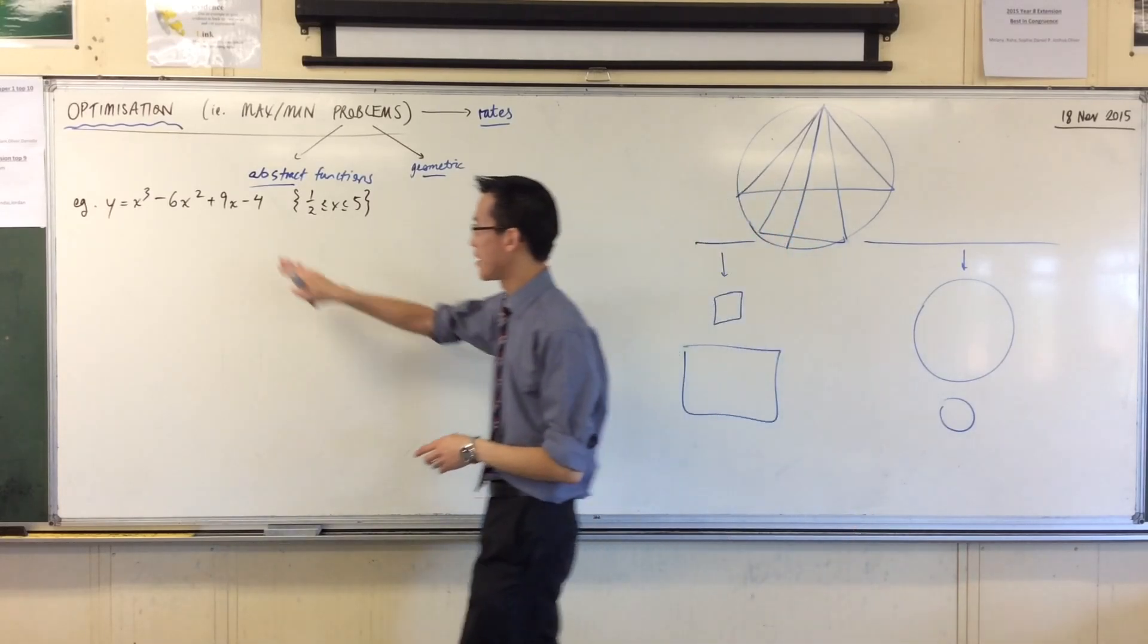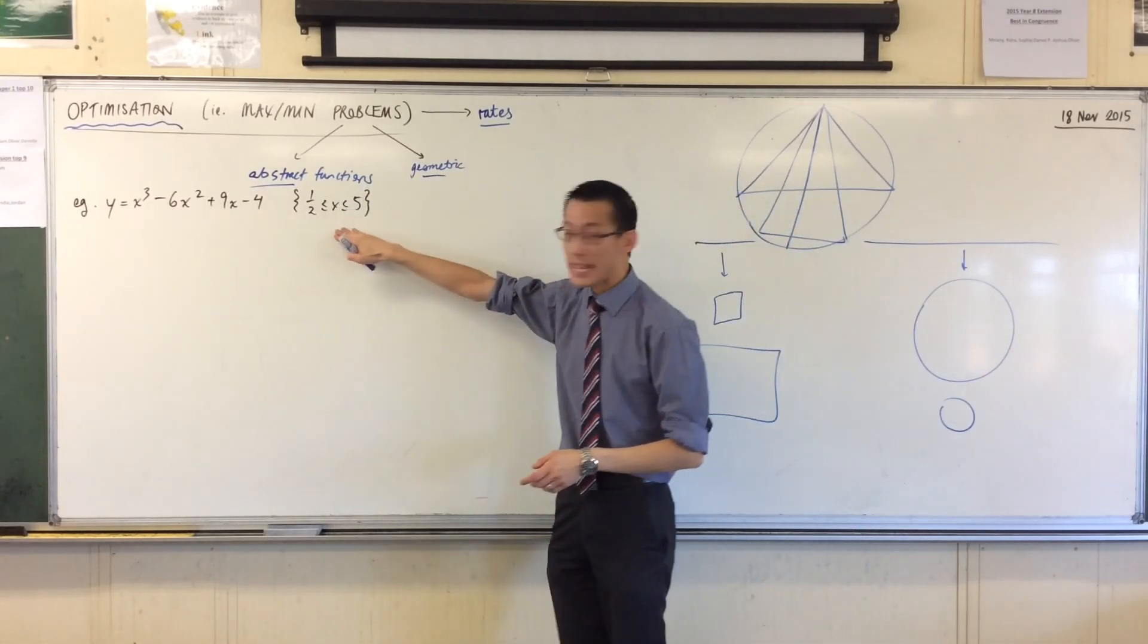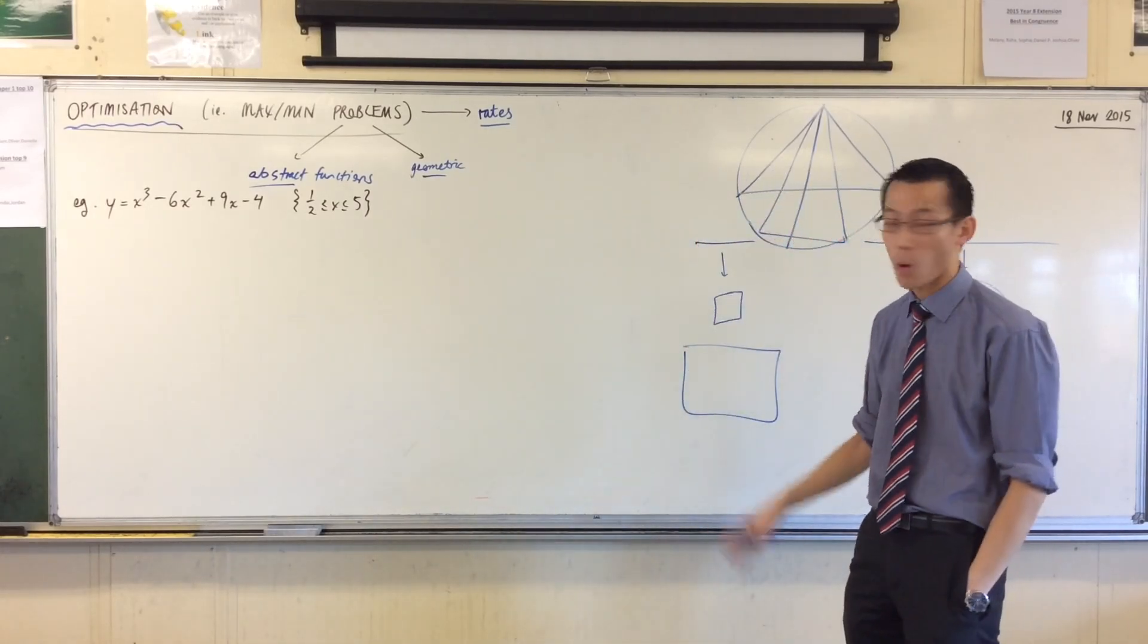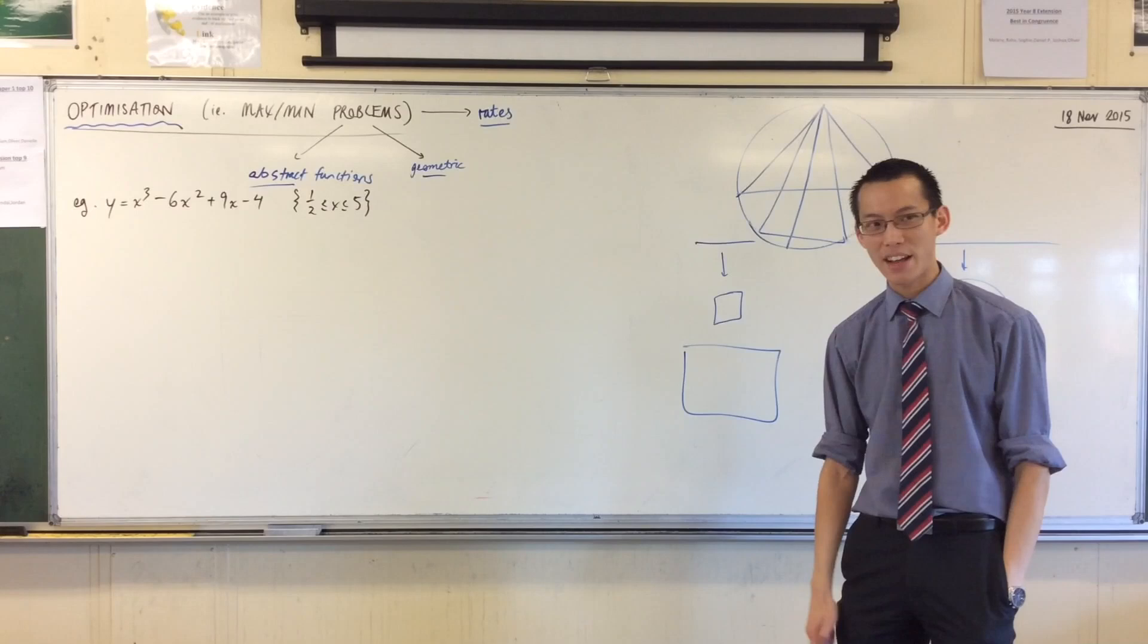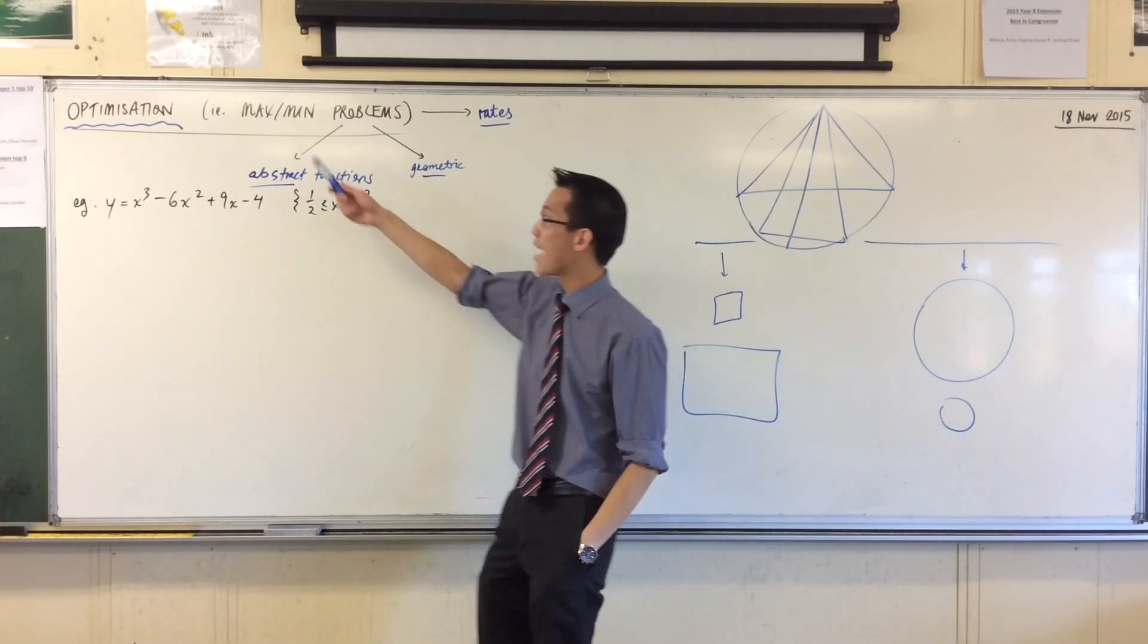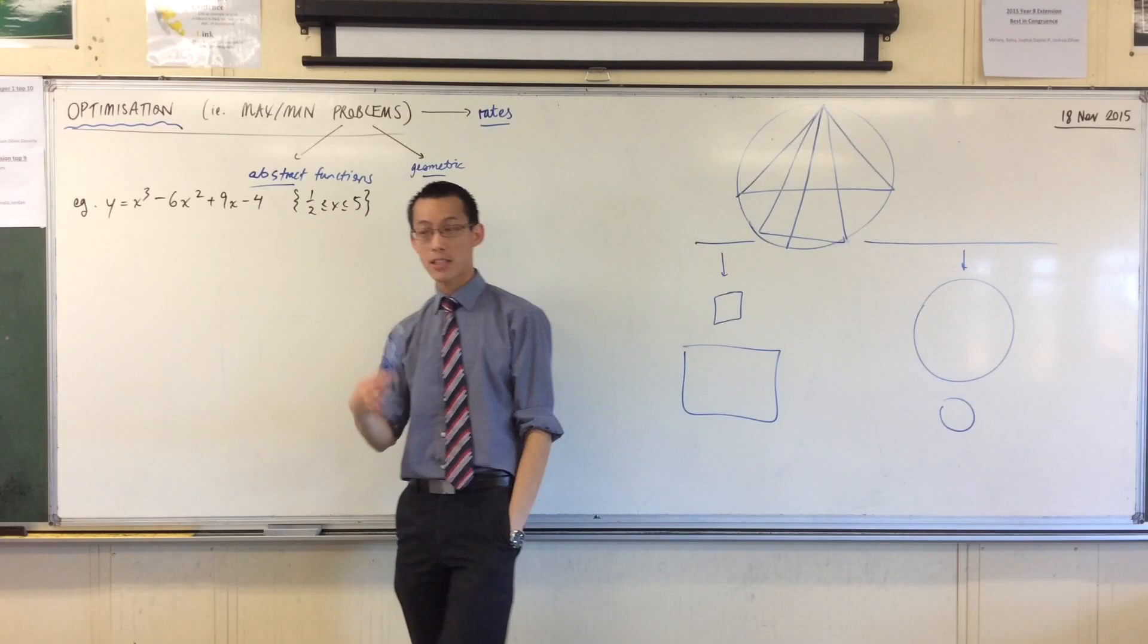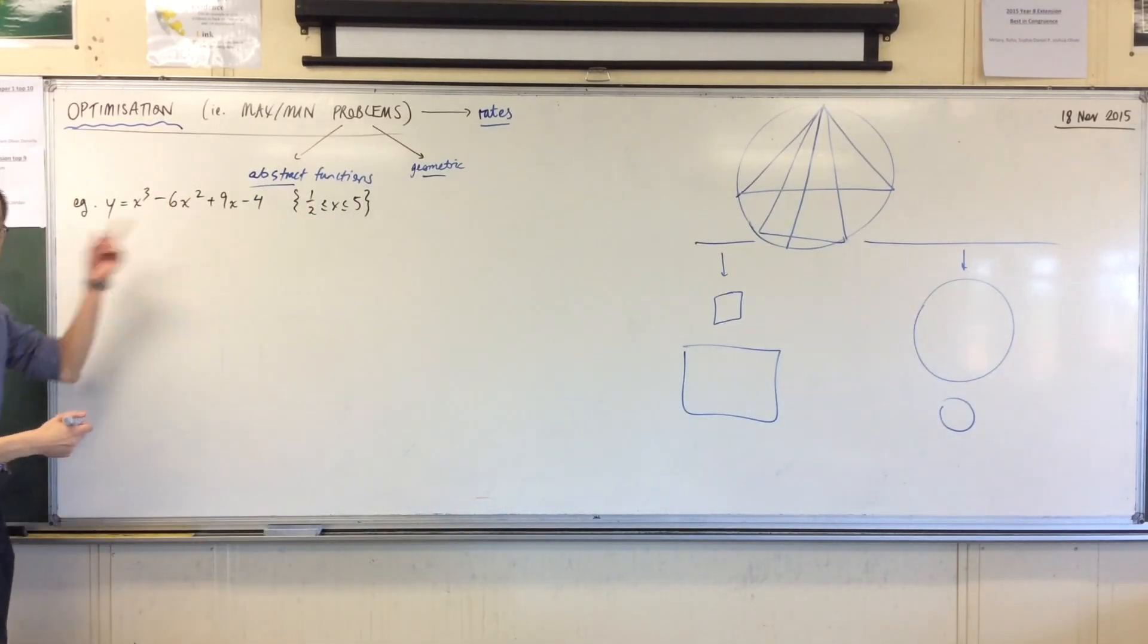So, simple. Here's a function. In this domain, what's the max? What's the min? That's it. That's all you have to find. So let's tackle this question. Now, obviously, we have calculus to find out maximum turning points and minimum turning points. So that's the first place we're going to begin. Let's get our derivative.